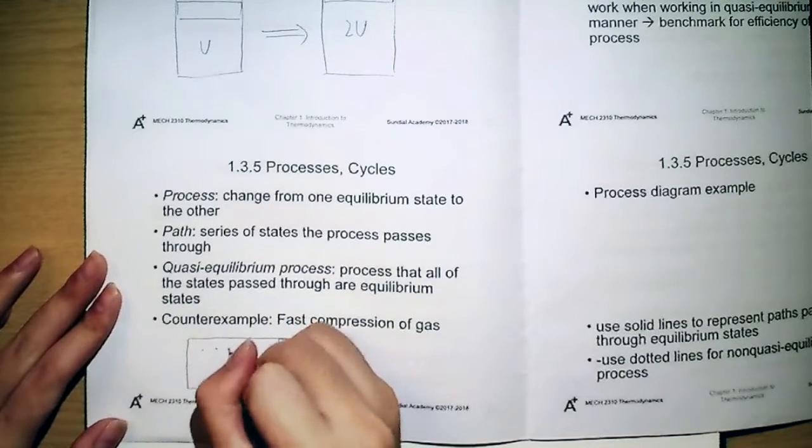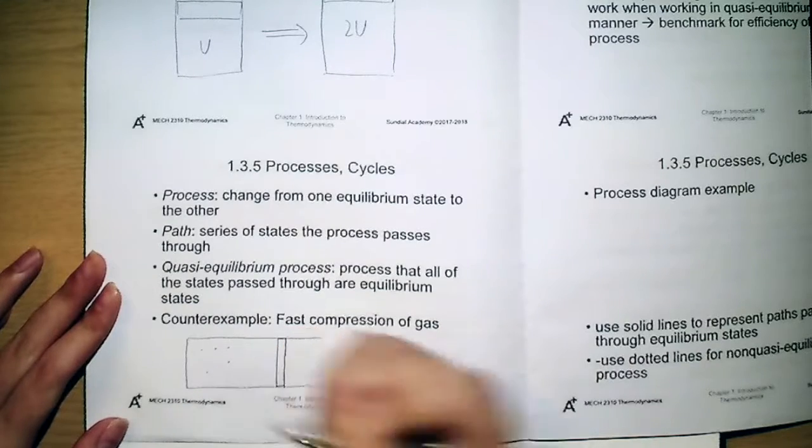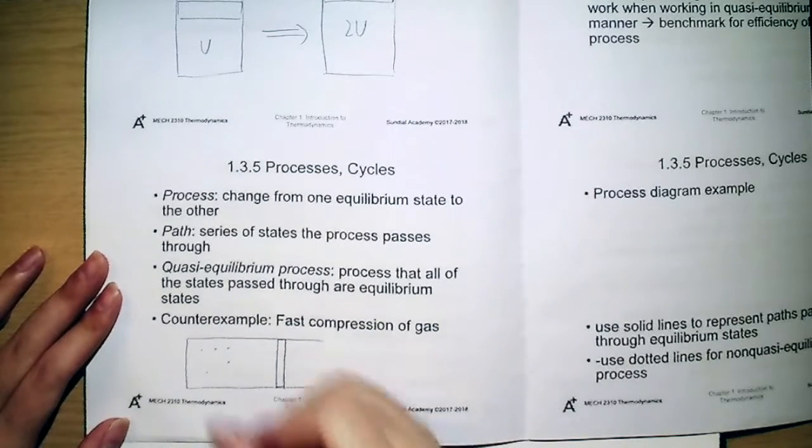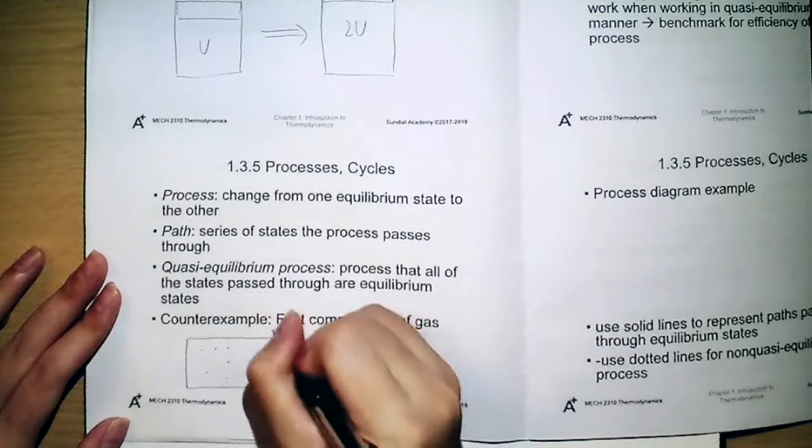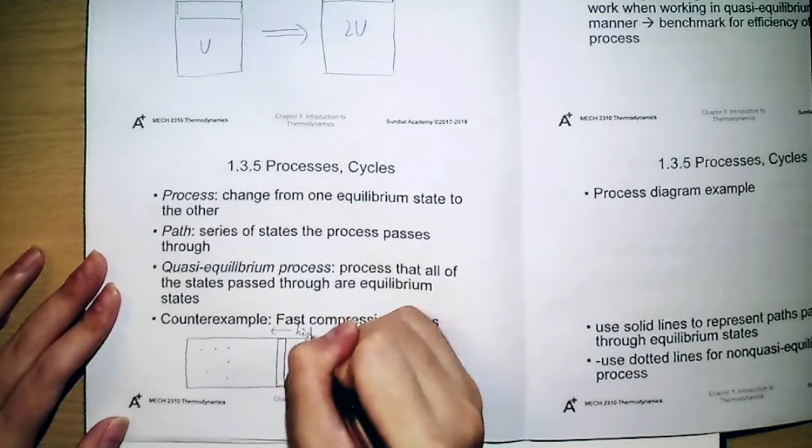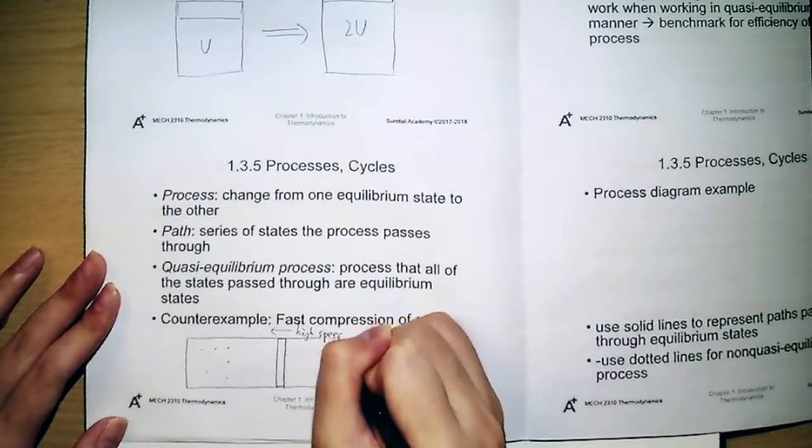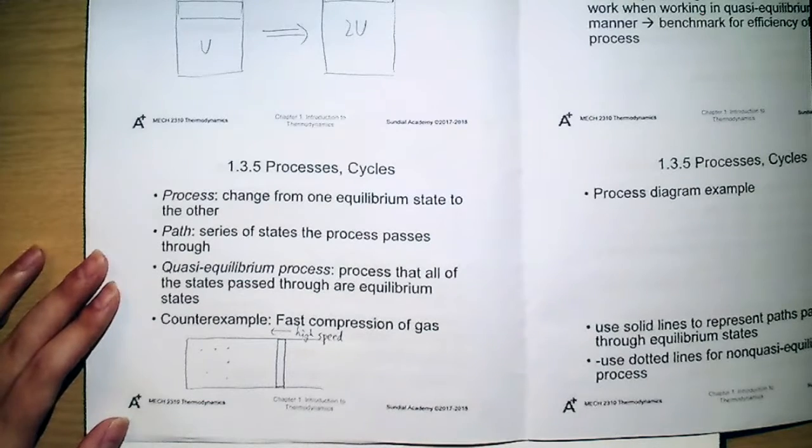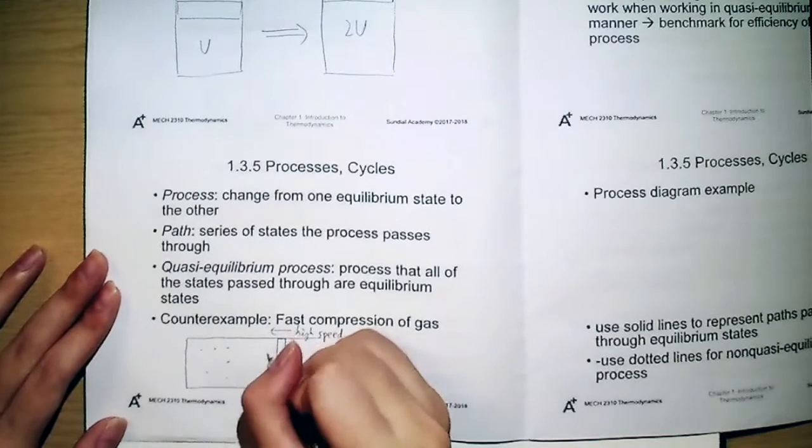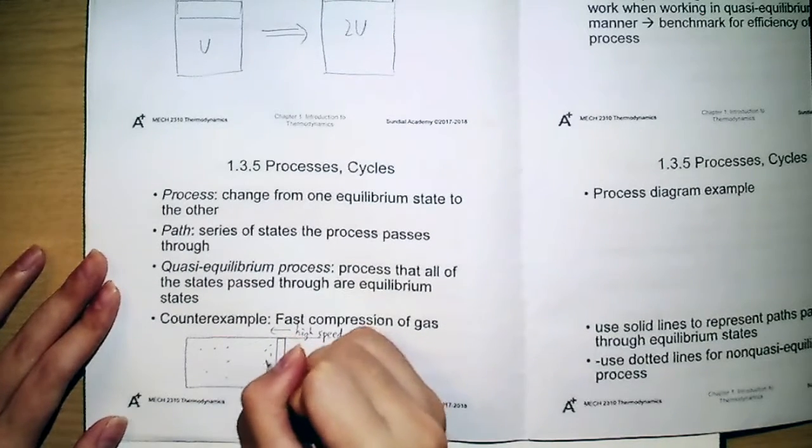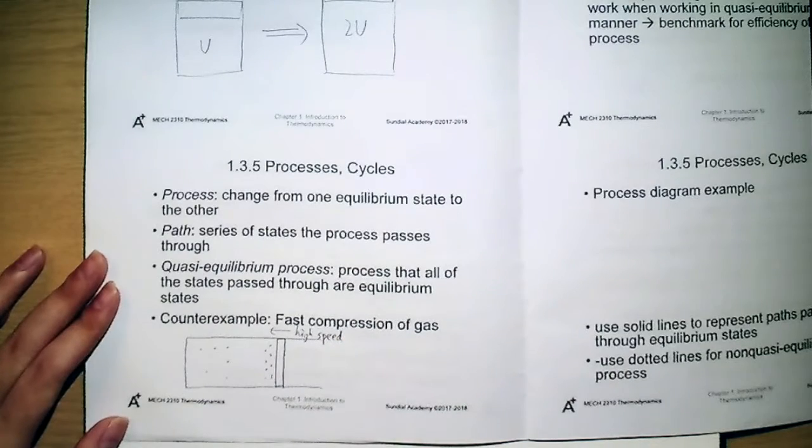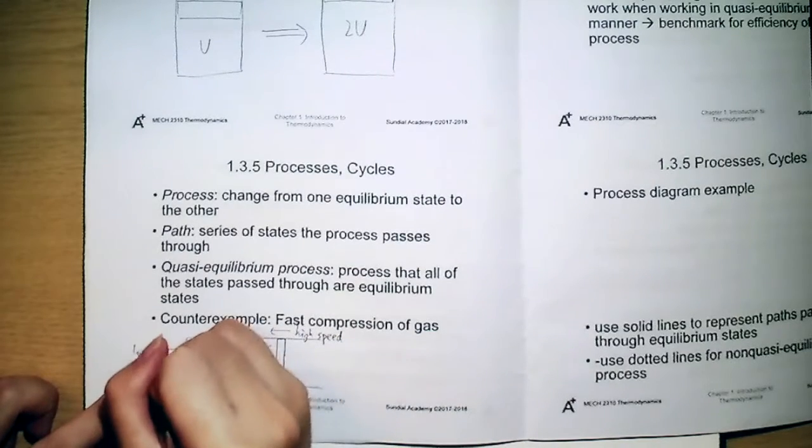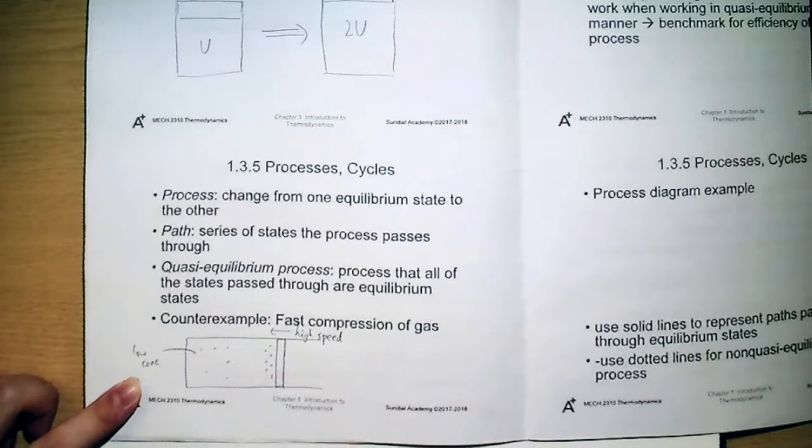For example, here would be low pressure, and when you compress it with a very high speed, then near the piston the molecules will be at a very high concentration. So that is a low concentration, and here is a high concentration.